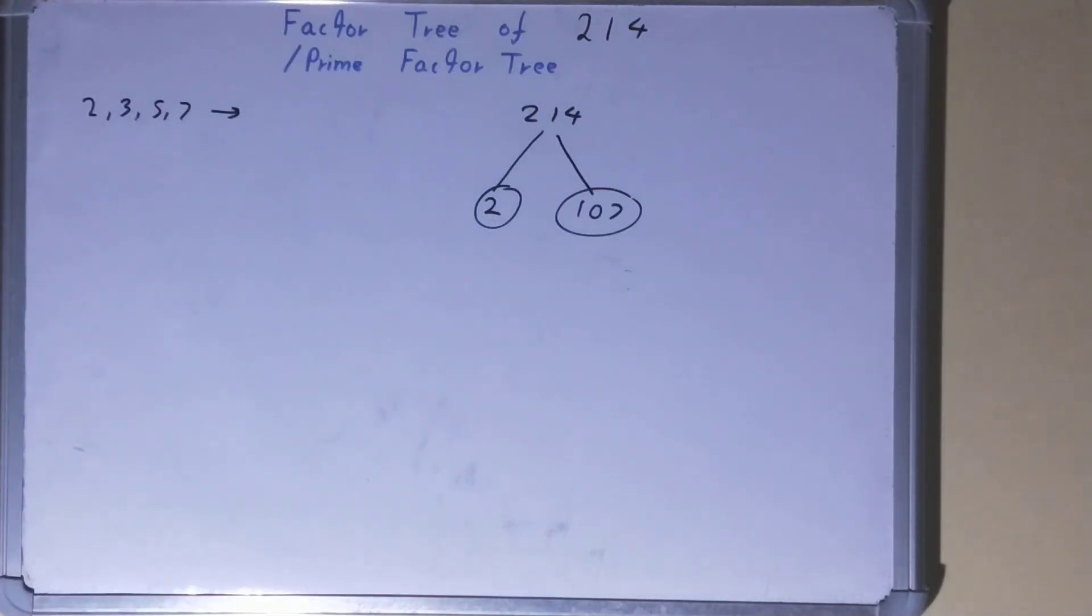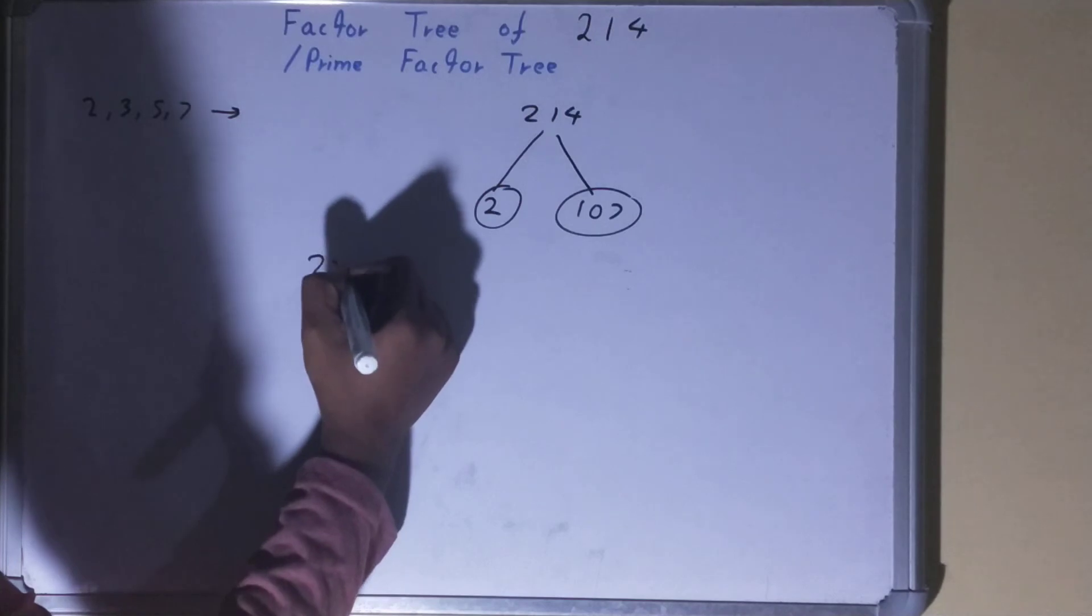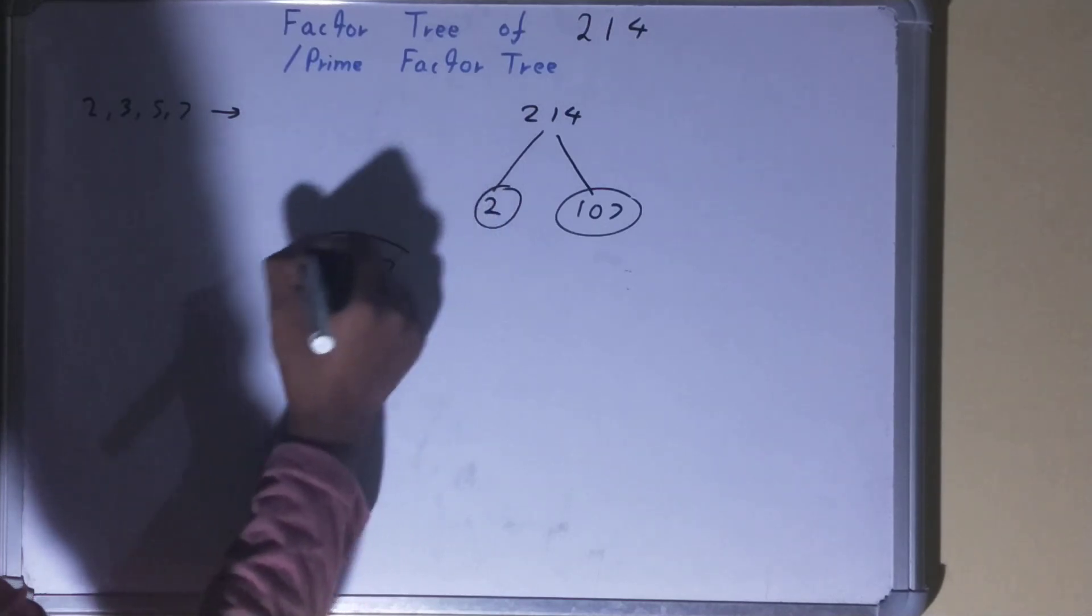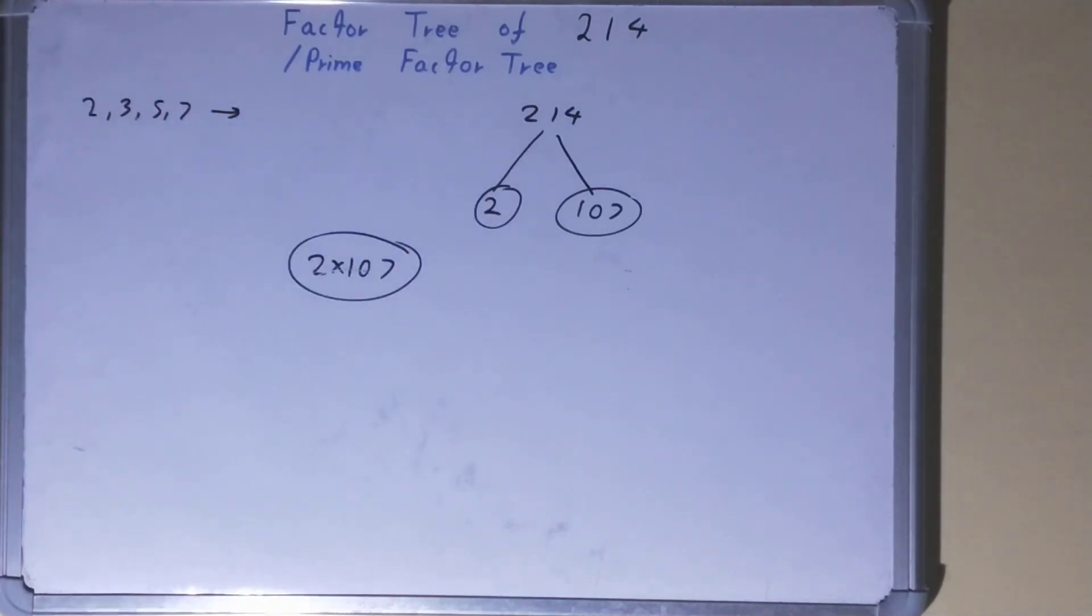required factor tree. Now if you want, you can write it separately in the form of prime factors like this. And that's all about the factor tree of the number 214. So if you found the video helpful, please click the like button, consider subscribing, and thanks for watching.